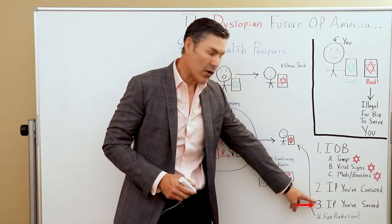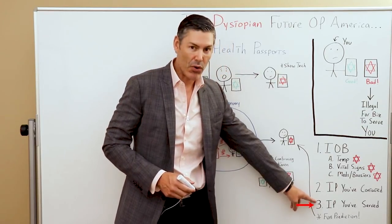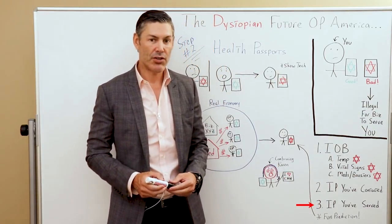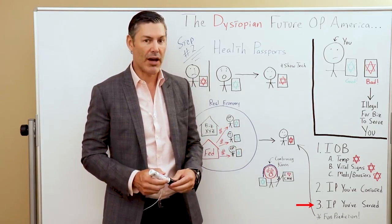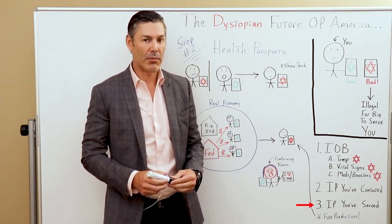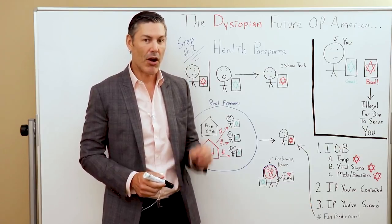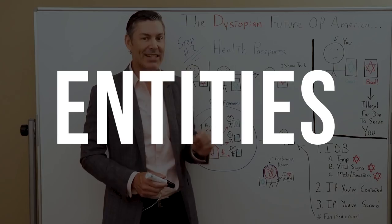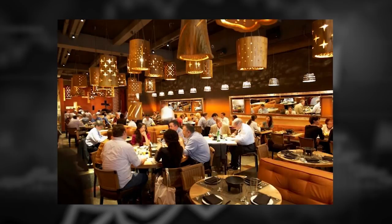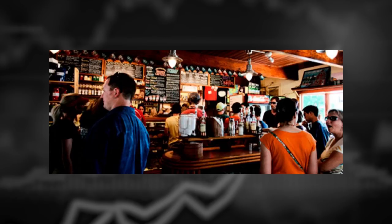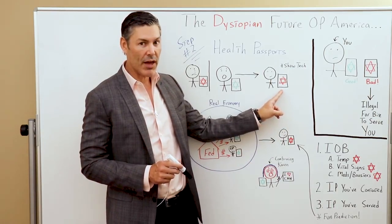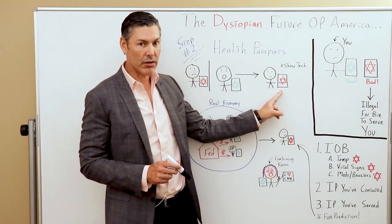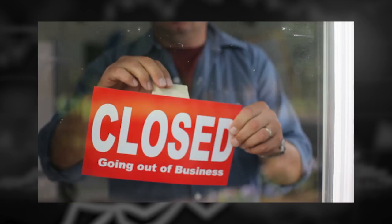It'll also show if a business has broken the rules and decided to serve you. If it can determine your location at all times, it not only can determine who you've been in contact with, but it also can tell which entities, which restaurants, which bars you've gone to. And if you went to one of those bars with a red star, all of a sudden that bar or restaurant could potentially be put out of business.